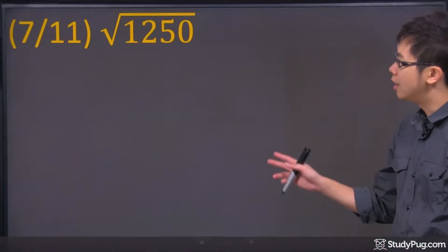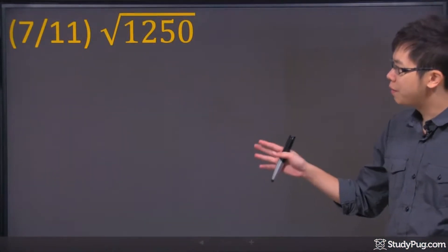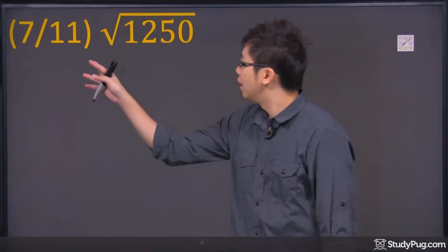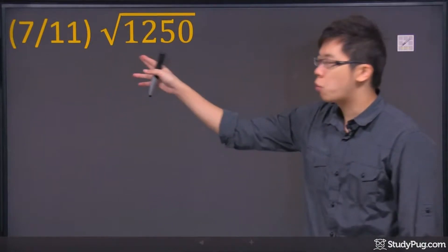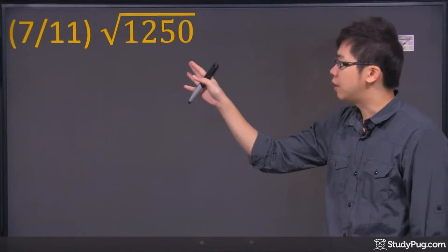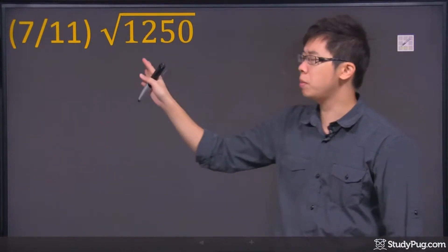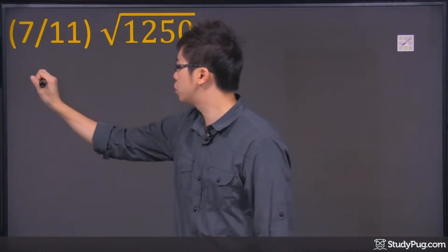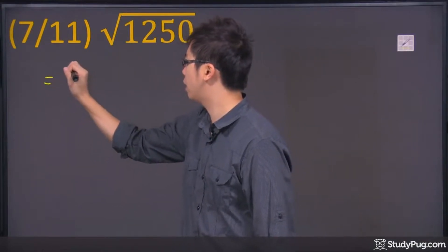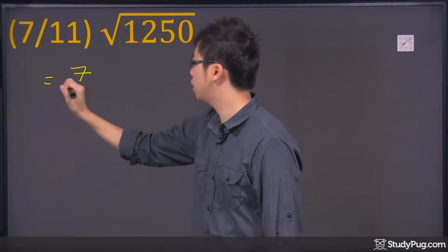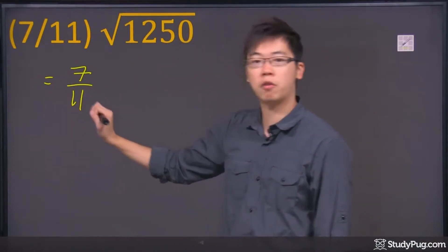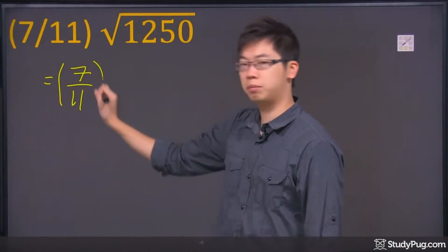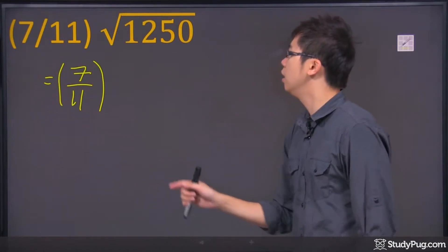Welcome to this question. We have 7 over 11 multiplied by radical 1250. The number outside of the radical, you can actually just keep it as it is — you can write it out as a fraction like this. You just have to leave it alone for now.